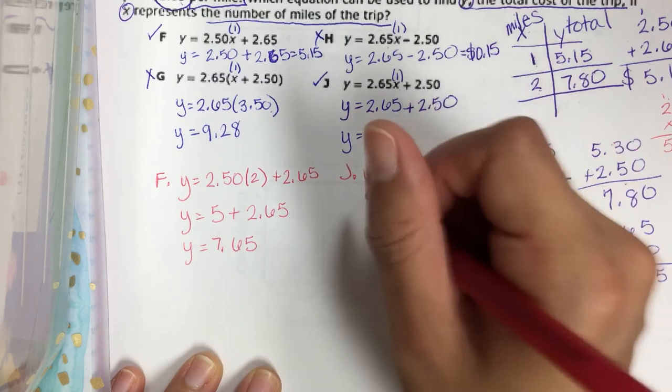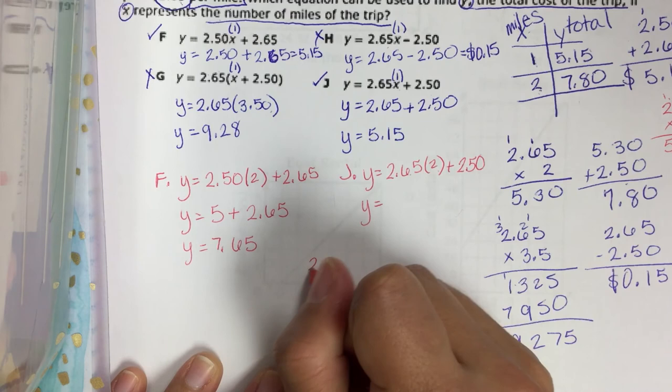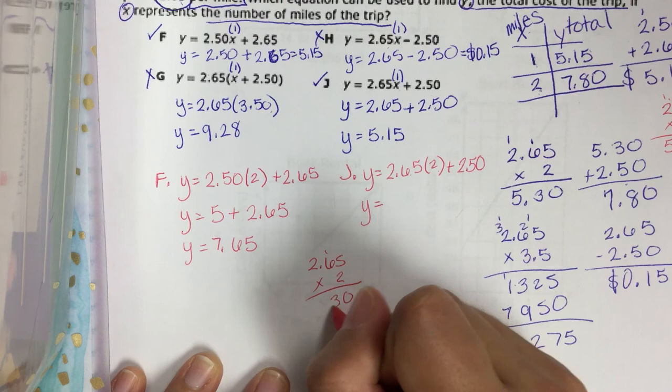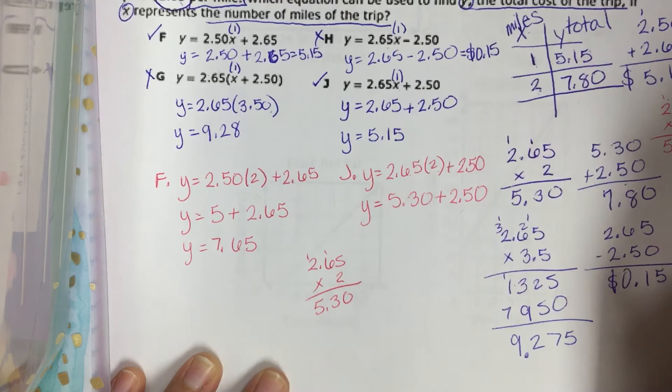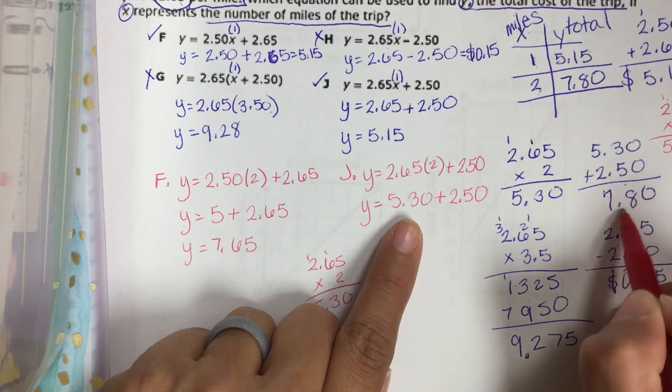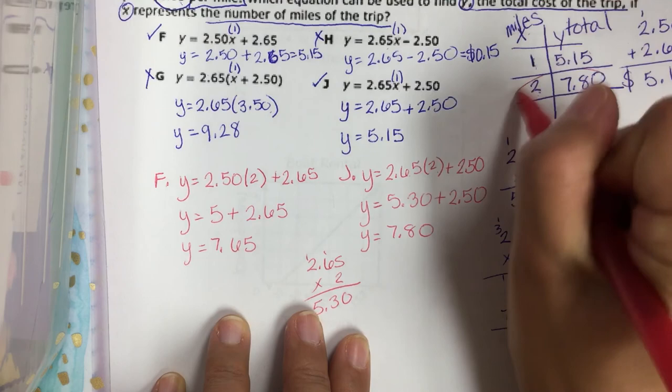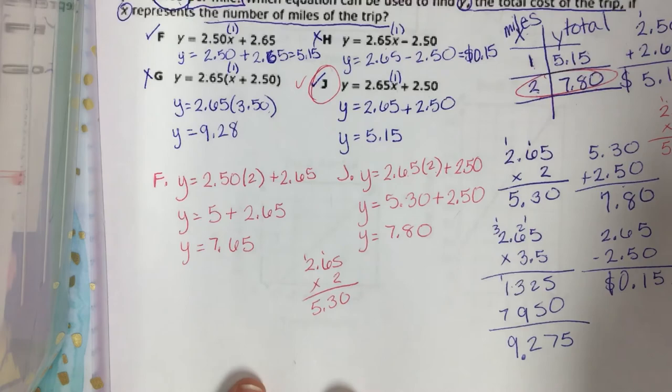$2.65 times 2 is $5.30. And I'm going to add $2.50. And I don't have to do it again because I did it earlier, $7.80. And that's exactly what I wanted when I plugged in X as 2. So I've just figured out that the answer was J.